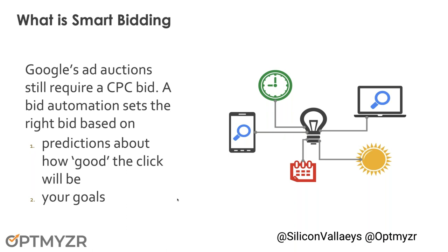The way these automated bidding systems from Google work — they call them smart bidding — is they look at factors like what is the time of day, what device the user is using, what's the day of the week, what other searches that person has done. Based on all those factors and more, they make predictions about how good a potential click will be, and 'good' correlates to your desired goal. If the goal is to sell things, Google will also look at the predicted value of the sale — is that customer going to spend five dollars or five hundred dollars? However, Google does not look at margin data. They just look at the value of the shopping basket. So if your $500 product actually doesn't make you a profit whereas your $5 one does, Google might prioritize the wrong things.